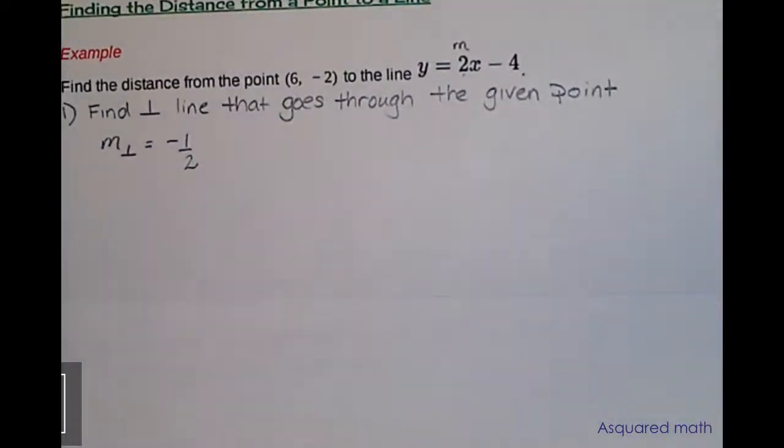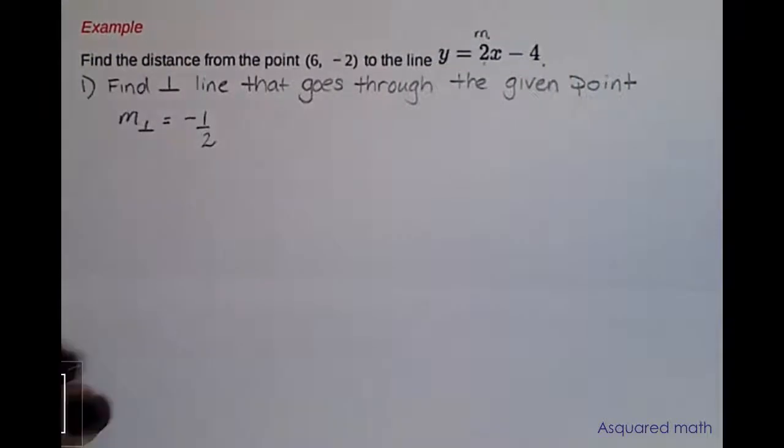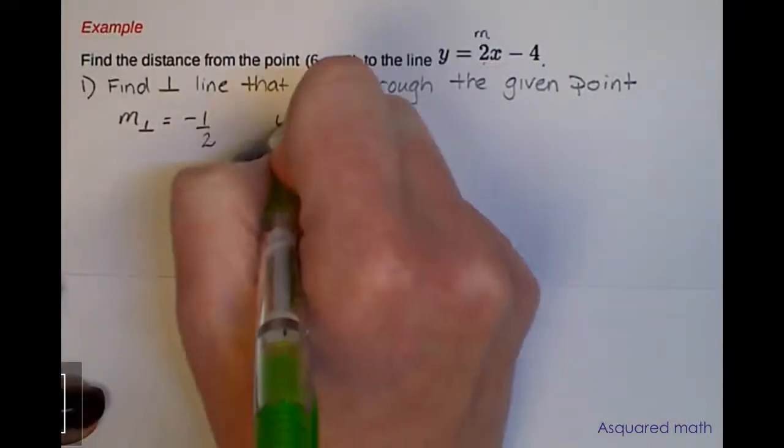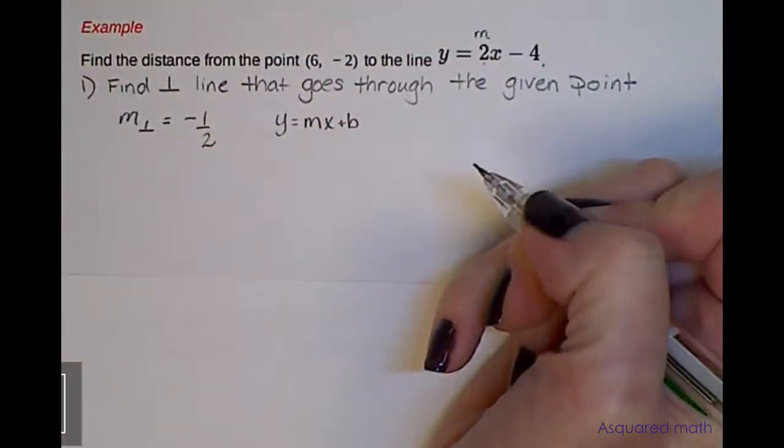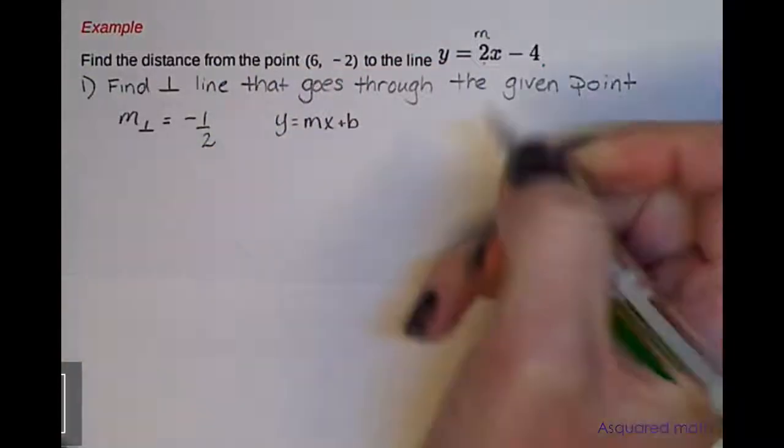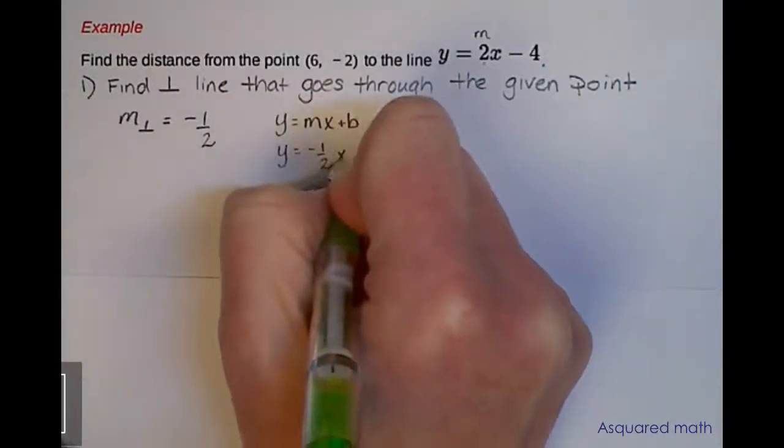From there we're going to work with our y = mx + b formula. We've got y = mx + b, and we're working with that negative one-half slope, so we have y = negative one-half x plus b.